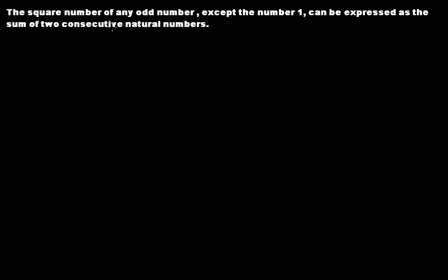The square number of any odd number, except the number one, can be expressed as the sum of two consecutive natural numbers. The exception for the number one will be discussed later in the video. First, let's discuss the other part.